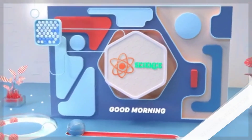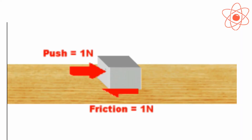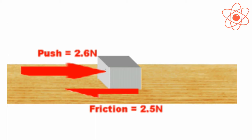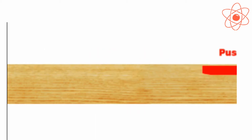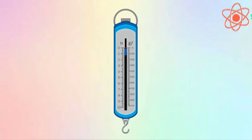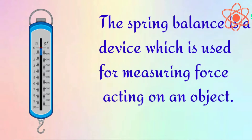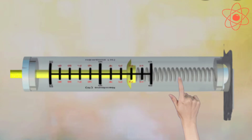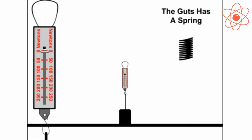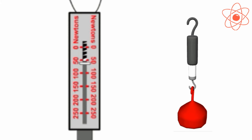Greetings of the day, dear students. Today we will discuss how to measure friction. The movement of an object over another causes friction between the contact surfaces of the two objects. You can measure the force of friction with the help of a spring balance. The spring balance is a device used to measure the force acting on an object. It consists of a coiled spring which gets stretched when a force is applied to it. A pointer moves on a graduated scale to measure the stretching of the spring.